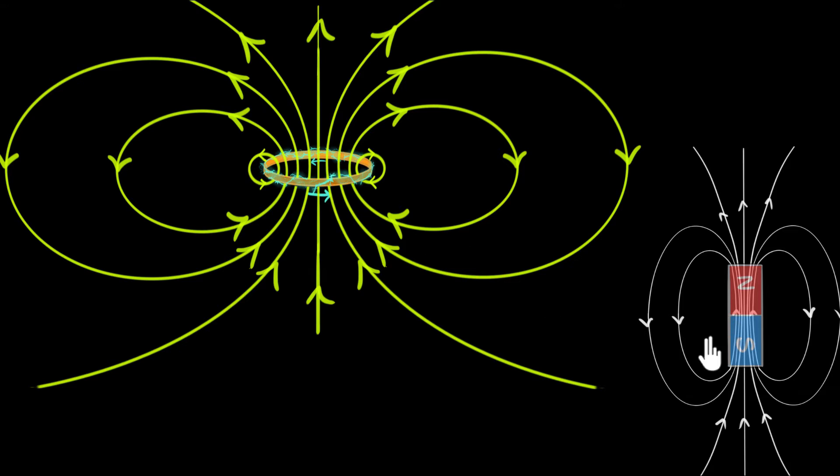But it doesn't quite resemble a bar magnet because if you look inside the bar magnet over here, you can see that there is this long region where the magnetic field is pretty straight, pretty much straight and parallel to each other. However, if you look at our artificial magnet over here, notice that this region where the magnetic field lines are straight is very short. And so this resembles not a big bar magnet, but a very tiny bar magnet.